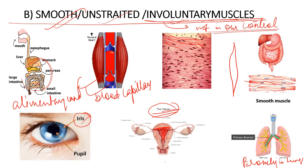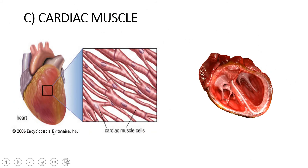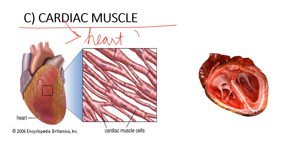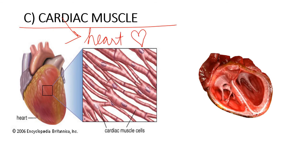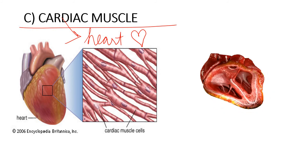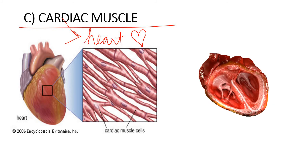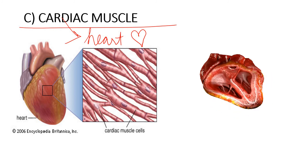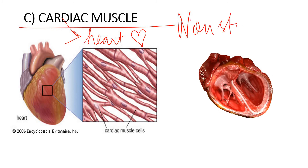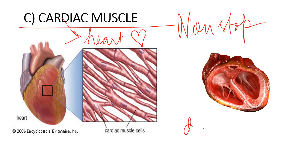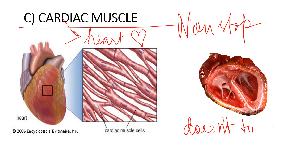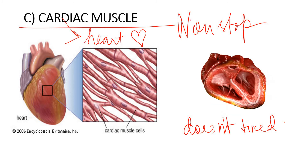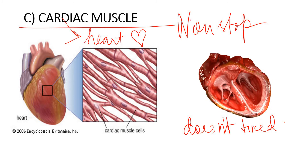The third type of muscular tissue is the cardiac muscle. The word 'cardiac' relates to the heart. These muscles are specifically found in the walls of the heart and work non-stop without getting tired — 24 hours, 7 days, 365 days a year.